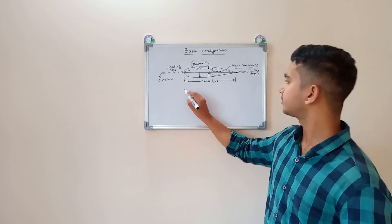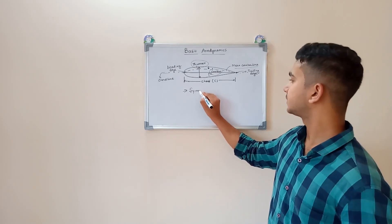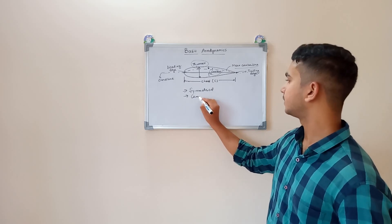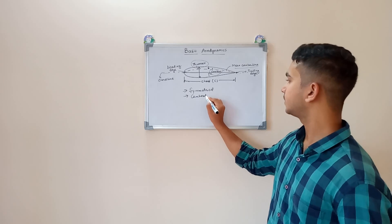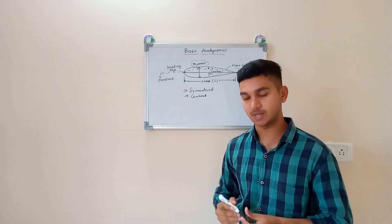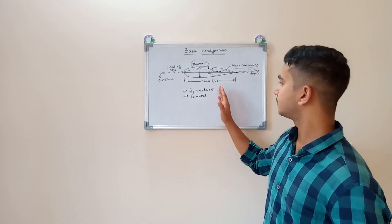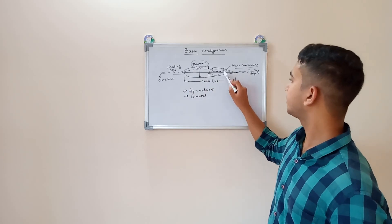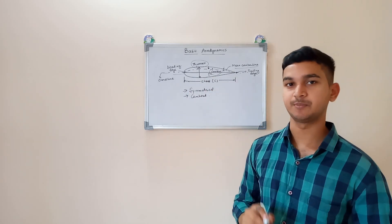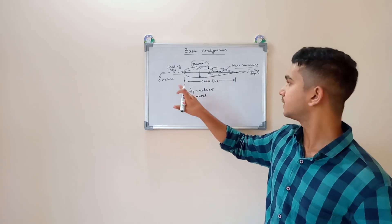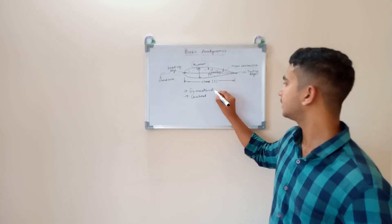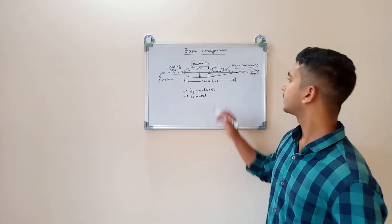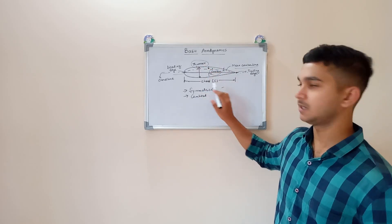There are two types of airfoils mainly: symmetrical airfoil and cambered airfoil. A symmetrical airfoil is one where the chord line and the mean camber line coincide. If they do not coincide, then it is a cambered airfoil. This is all about the airfoil nomenclature.